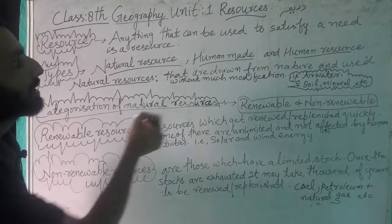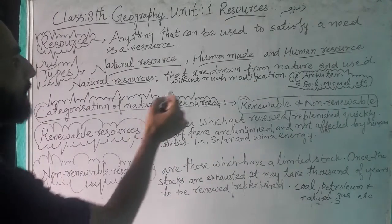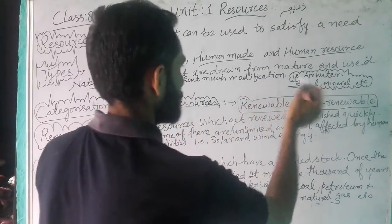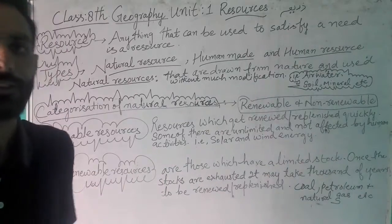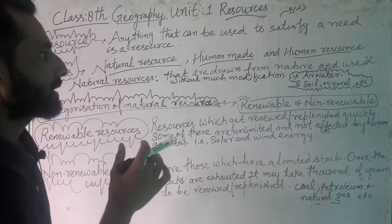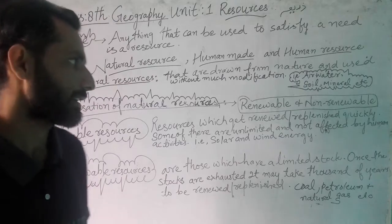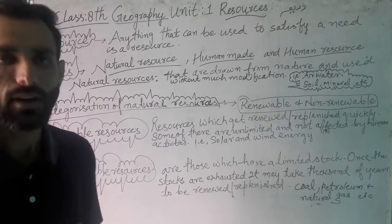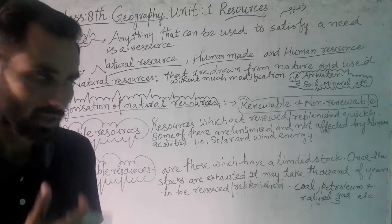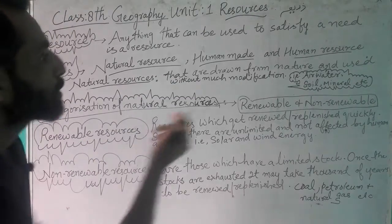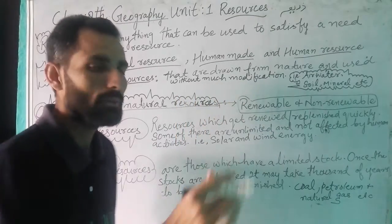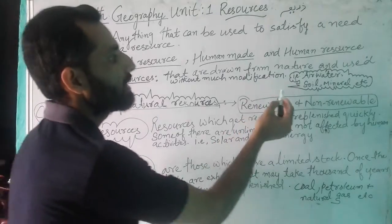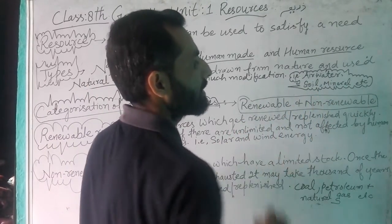Natural resources are those that are drawn from nature and used without much modification. For example, if we are using water, we are not making any modification to it. We use oxygen and release carbon dioxide. Air, water, soil, minerals, etc. are all natural resources.